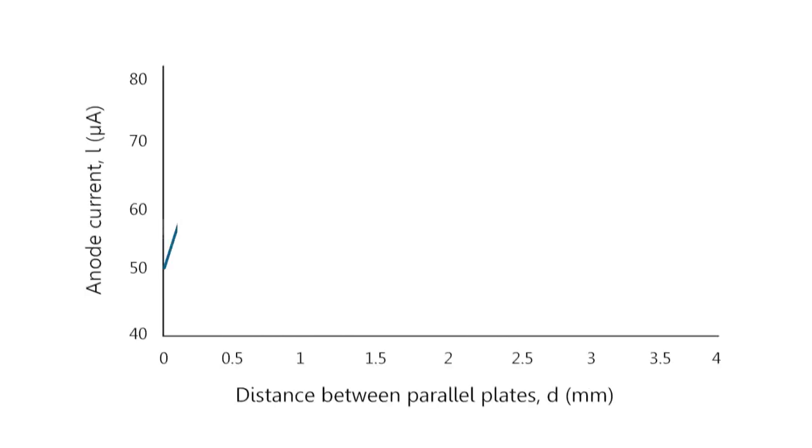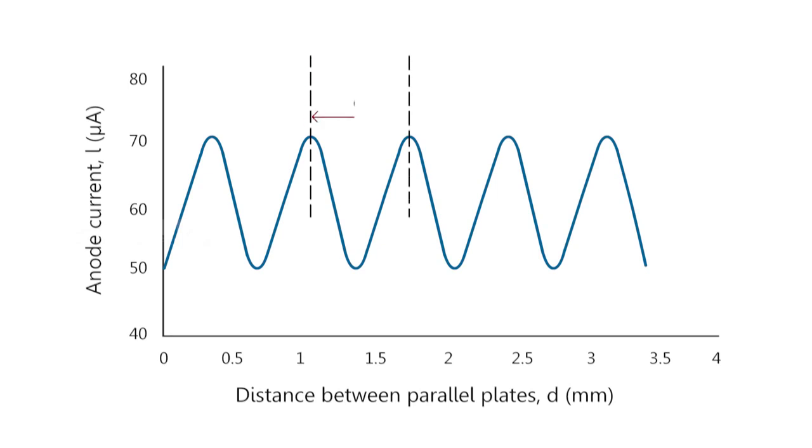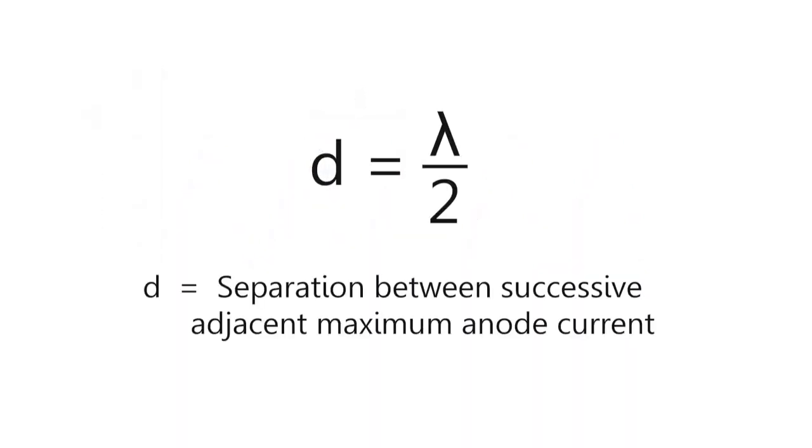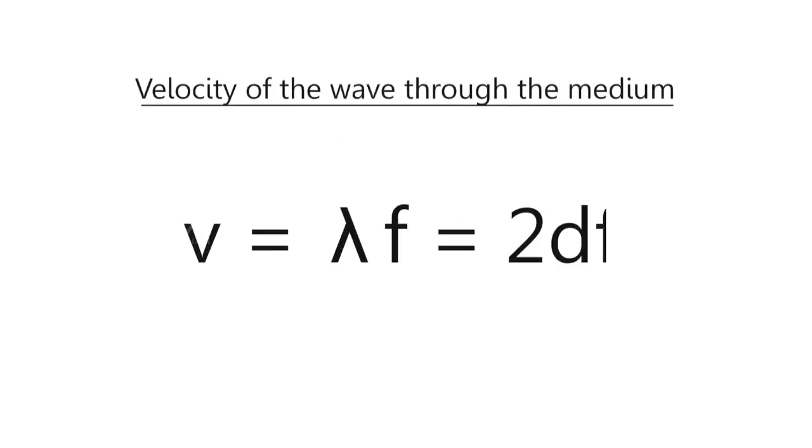Now draw a graph between the micrometer distance and anode current. We will obtain a sine wave. The difference between the points of successive maxima will be d = λ/2. Using the equation, calculate the velocity of the wave through the medium as v = λf = 2df.